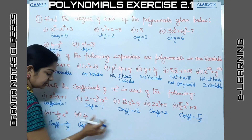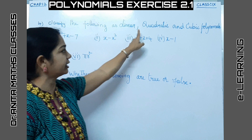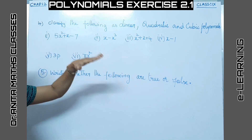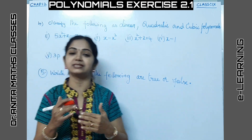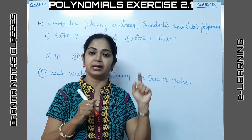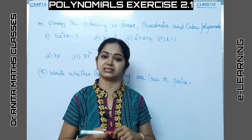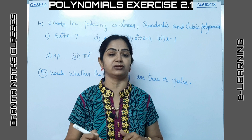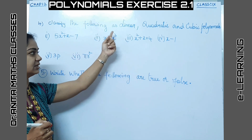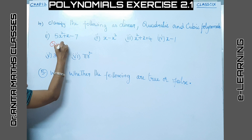Please note that down. Now the fourth problem: classify the following as linear, quadratic, and cubic polynomials. A linear polynomial has degree 1, with general form ax + b. A quadratic polynomial has degree 2, with general form ax² + bx + c = 0. A cubic polynomial has degree 3, with general form ax³ + bx² + cx + d = 0. The first expression has degree 2, so it is a quadratic polynomial.